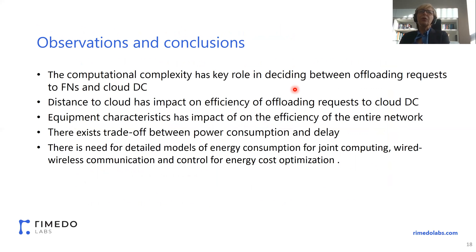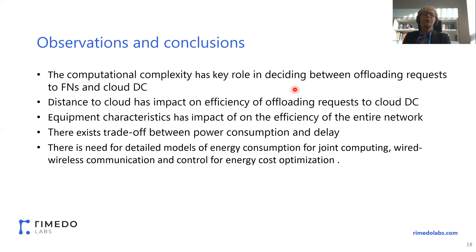In conclusion, the following observations stand out: computational complexity has a key role in deciding between offloading requests to fog nodes versus cloud data centers. Distance to the cloud has an impact on the efficiency of offloading. Equipment characteristics impact the efficiency of the entire network. There exists a tradeoff between power consumption and delay. And there is a need for detailed models of energy consumption for joint communication and computing, including both wired and wireless communication and control for energy cost optimization.